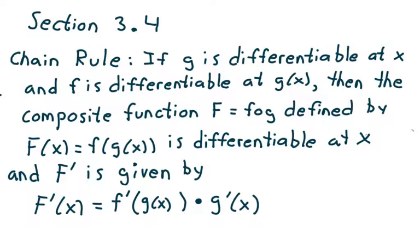I like to think of the chain rule this way: take the derivative of the outside function and evaluate it at the inside function, then take that result and multiply it by the derivative of the inside function.